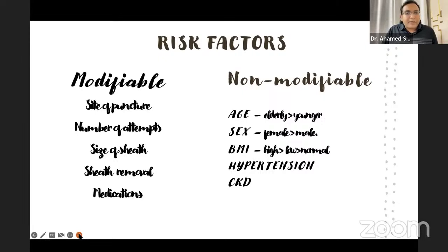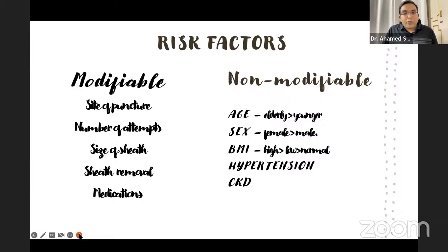Risk factors can be modifiable — that is, site of puncture, number of attempts (single attempt is best; multiple attempts lead to complications), and size of the sheath (smaller is better). Sheath removal time: the ideal is a minimum of 30 minutes — one French equals at least 5 minutes, so 5 French means at least 25 minutes. Medications such as anticoagulant and antithrombotic agents also matter. Non-modifiable factors include elderly age, female gender, BMI, hypertension, and CKD.